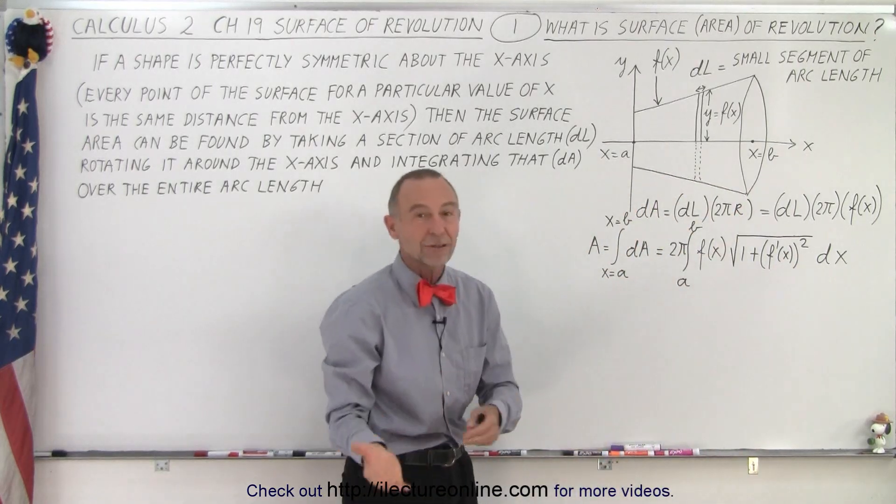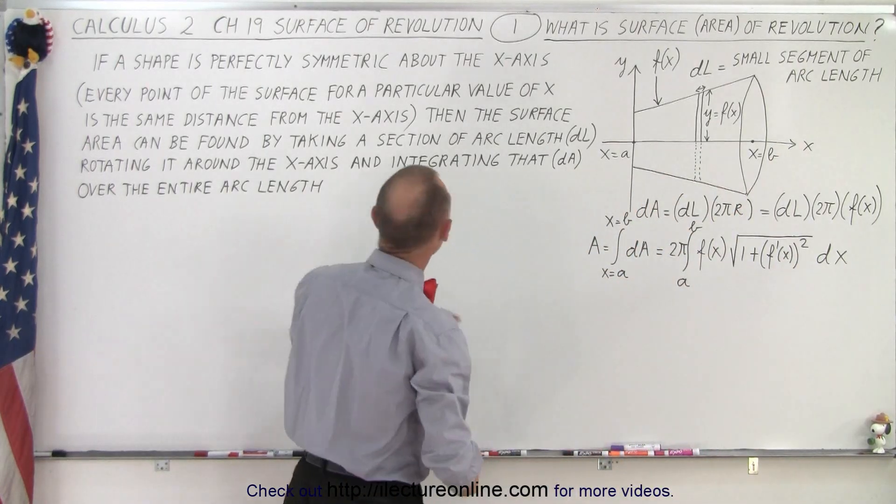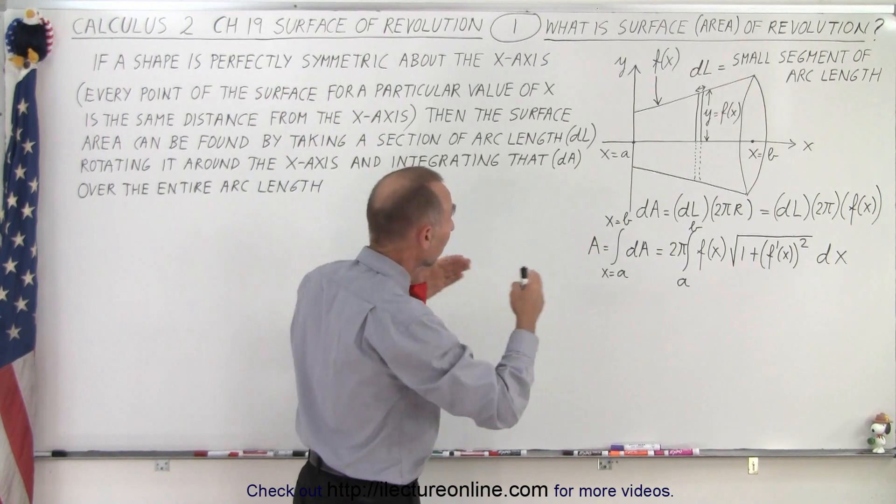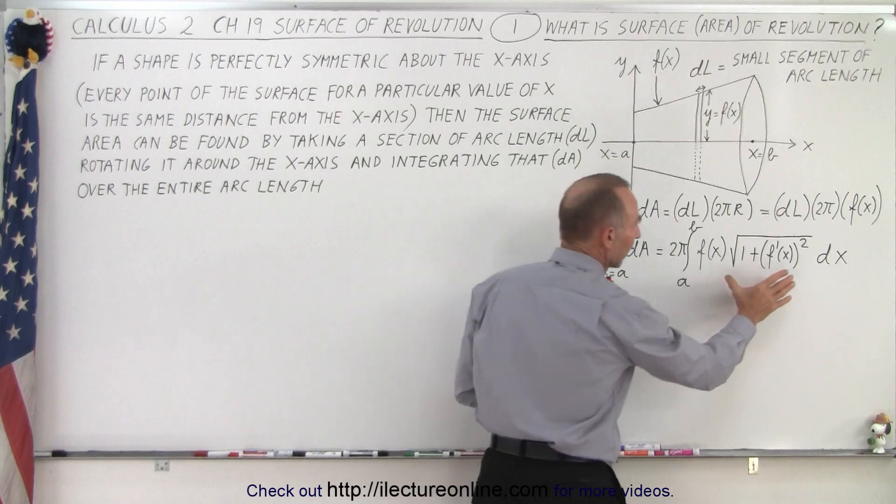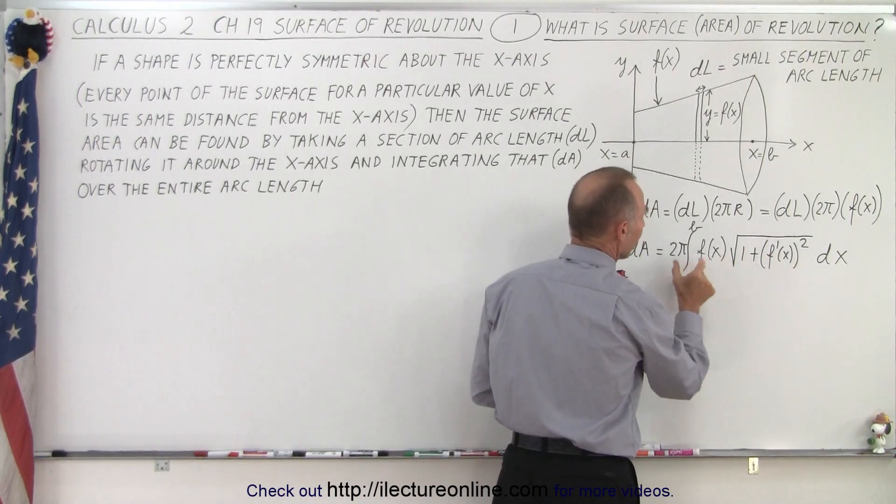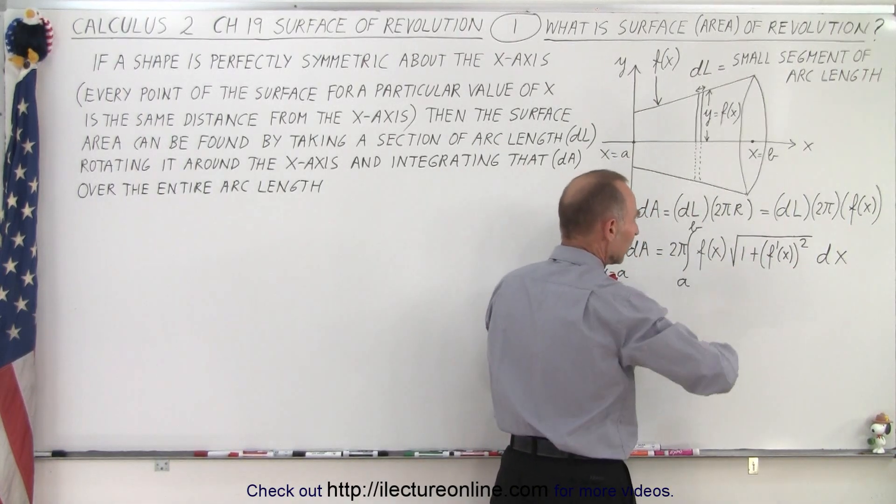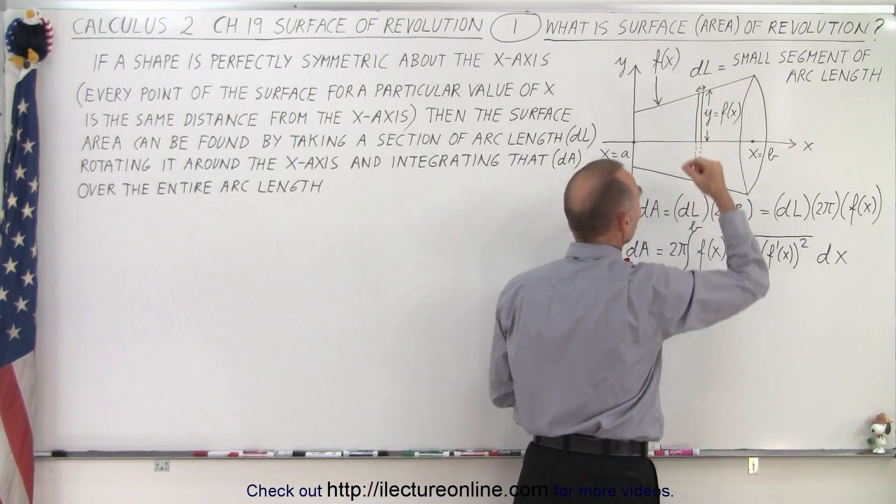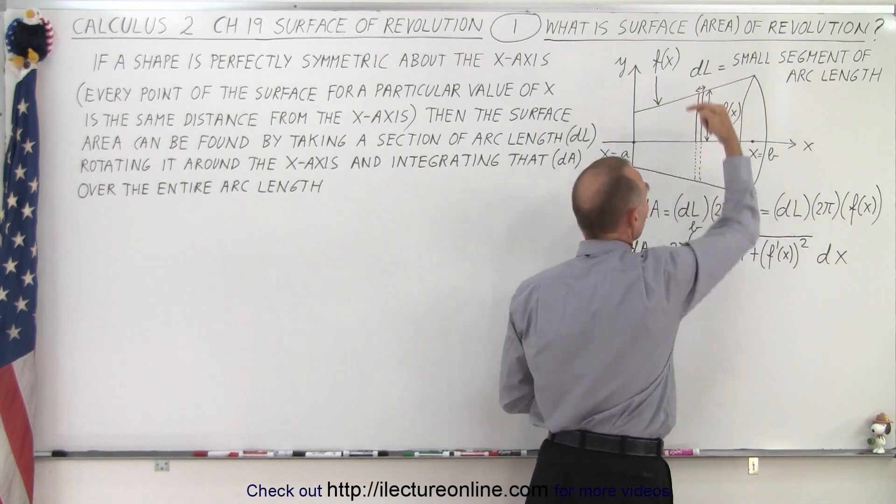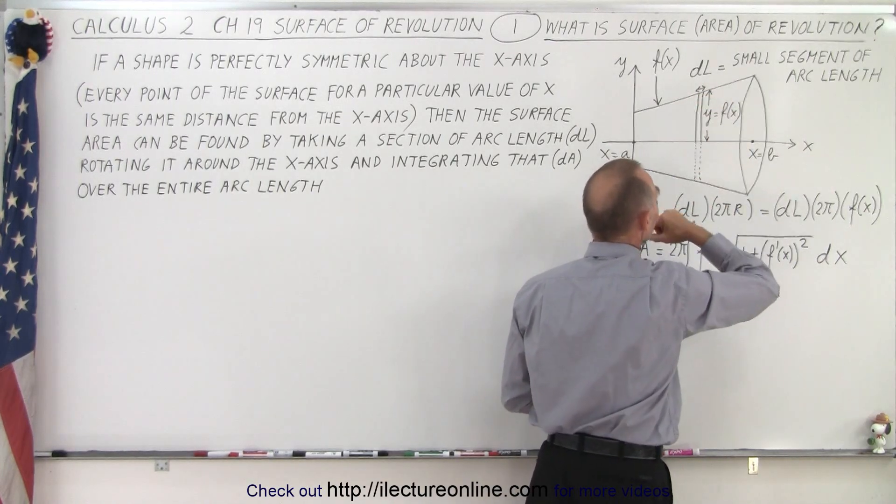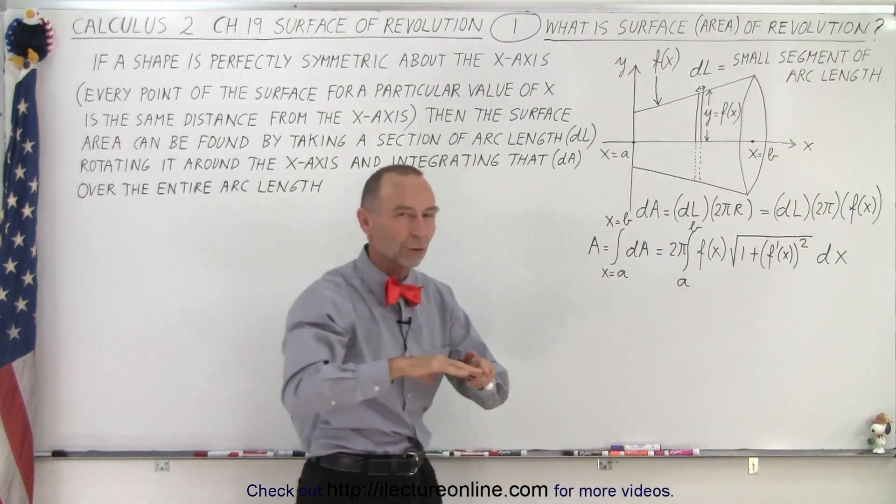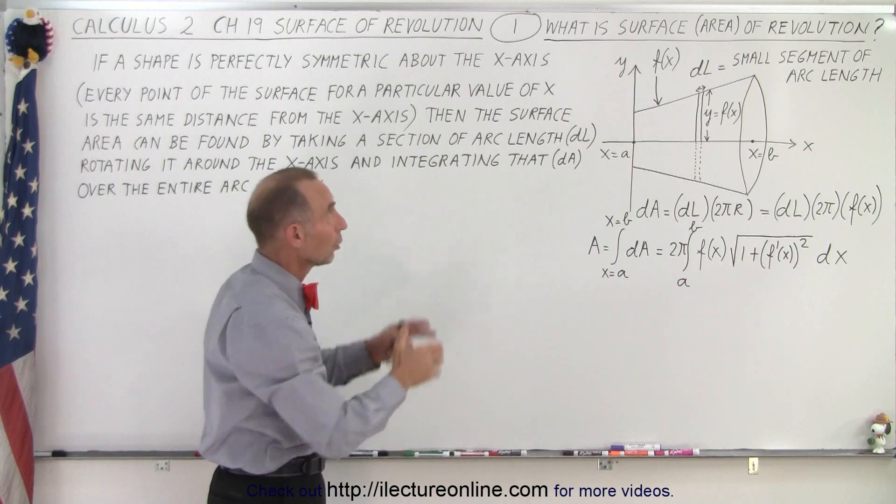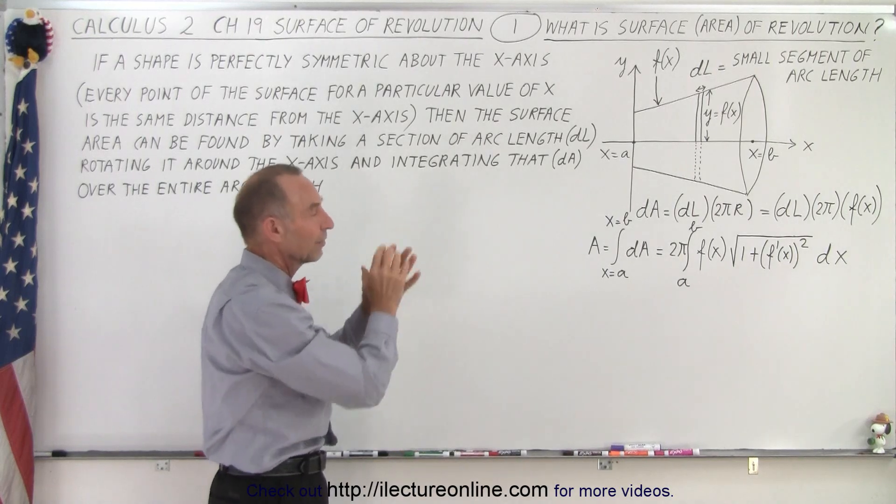If you don't remember that, just go back to the previous set of videos, chapter 18, where we talk about the arc length and how to calculate that. Simply, we multiply the arc length dl times 2πr, the circumference that we get when we revolve around the x-axis. We get that little strip dA, we integrate across all the dAs, and we get the total surface area or what we call the surface of revolution of that object.